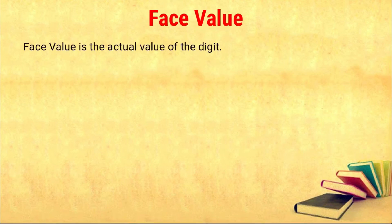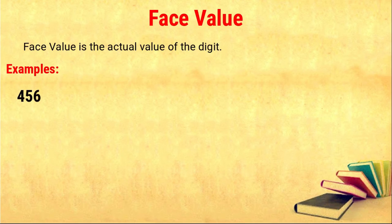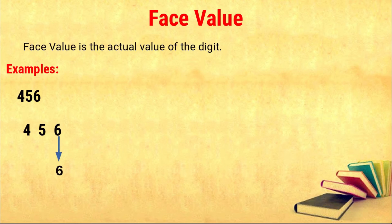Now we will see face value. Face value is nothing but the actual value of the digit. We will see some examples. The given number is four hundred and fifty six. The face value is the actual value of the digit — so for six the face value is six, for five the face value is five, and for four the face value is four.